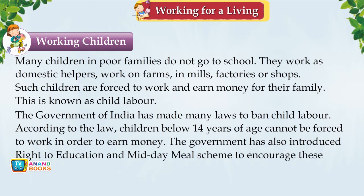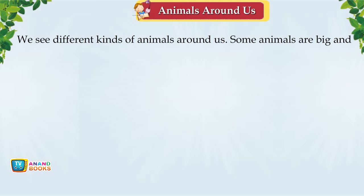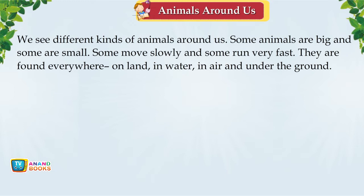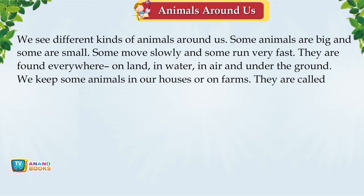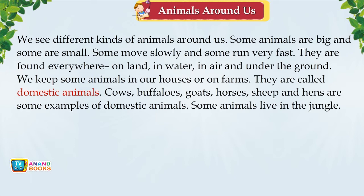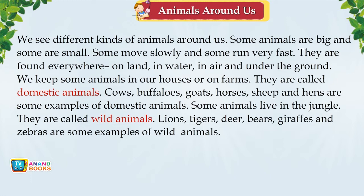Chapter 8: Animals Around Us. We see different kinds of animals around us — big and small, slow and fast — found everywhere: on land, in water, in air and underground. We keep some animals in houses or on farms — these are called domestic animals. Cows, buffaloes, goats, horses, sheep and hens are examples. Some animals live in the jungle — they are called wild animals. Lions, tigers, deer, bears, giraffes and zebras are examples.